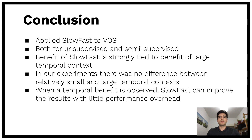In conclusion, we built an architecture to apply slow-fast for video object segmentation and applied it for both unsupervised and semi-supervised segmentation. Our experiments show that the benefit of slow-fast is strongly tied to the benefit of temporal context. As there was mostly no performance improvement from small to large temporal context, we often couldn't observe the benefit from slow-fast as well. But in the cases where a temporal benefit was visible, using slow-fast also improves the results while having little performance overhead.